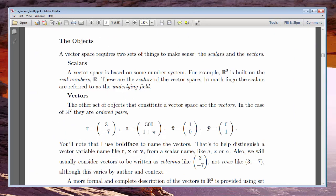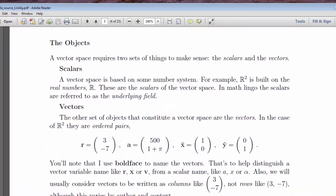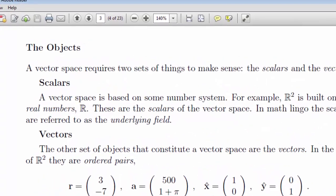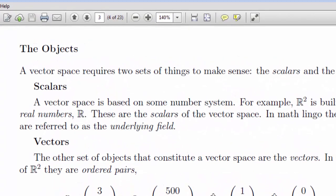A vector space is like a video game. It has players, and it has rules. The players, also known as objects, fall into two categories, scalars and vectors. The scalars are easy. They're ordinary numbers. They can be real or complex, depending on the vector space. The vectors are the more interesting things.